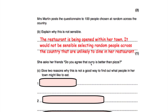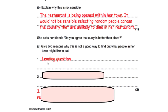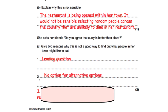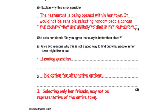She asks her friend: 'Do you agree that curry is better than pizza?' We need to give two reasons why this is not a good way to find out what people in her town might like to eat. First, it's a leading question — 'do you agree that curry is better than pizza?' — trying to get people to say yes. Second, there's no option for alternative responses beyond curry and pizza. Third, she's only selecting her friends, who may not be representative of the entire town — they may all be a similar age or share similar tastes.